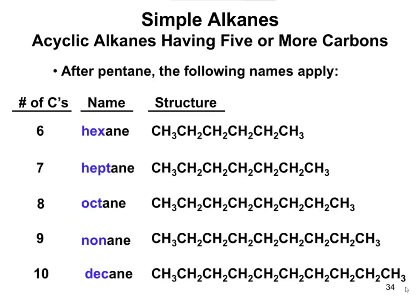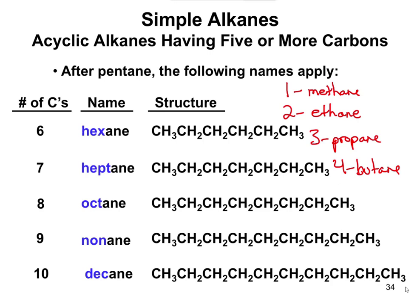You need to know alkanes up to decane. The full list: one carbon is methane, two carbons is ethane, three is propane, four is butane, five is pentane, six is hexane, seven is heptane, eight is octane, nine is nonane, ten is decane. After pentane, those prefixes should help you remember the names. The first four — methane through butane — are the more difficult ones and you'll see them more often since they're shorter. In the next video, we'll talk about how to use these names when naming a complete molecule.